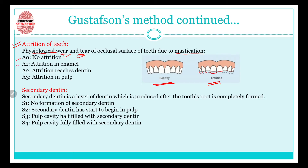The four scales for attrition are A0, A1, A2, and A3. A0 means there is no attrition. A1 means attrition is in the enamel area. A2 means attrition has reached the dentine. A3, the most severe, means attrition has reached the pulp area.